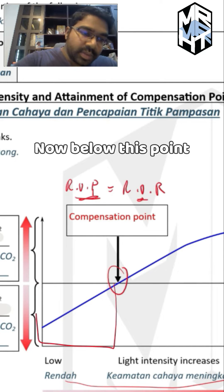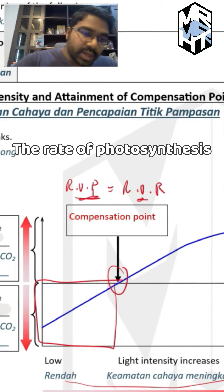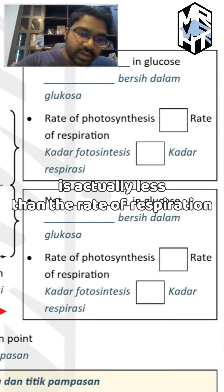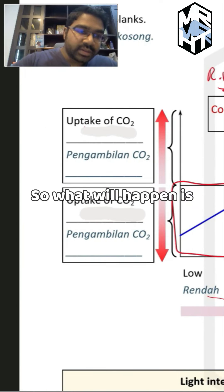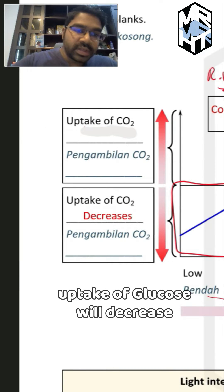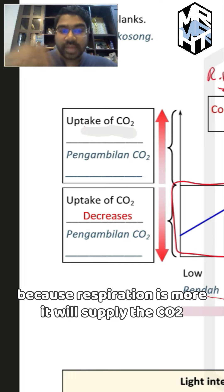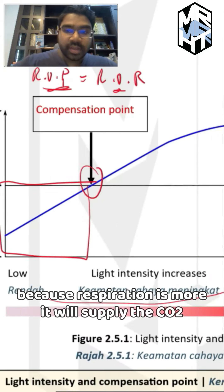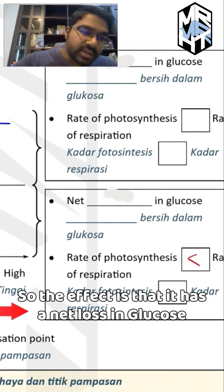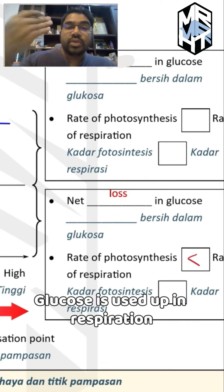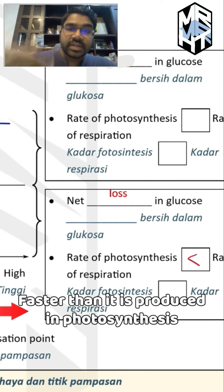Now below this point, the rate of photosynthesis is actually less than the rate of respiration. So what will happen is uptake of glucose will decrease because respiration is more — it will supply the carbon dioxide. The effect is there is a net loss in glucose; glucose is used up for respiration faster than it is produced by photosynthesis.